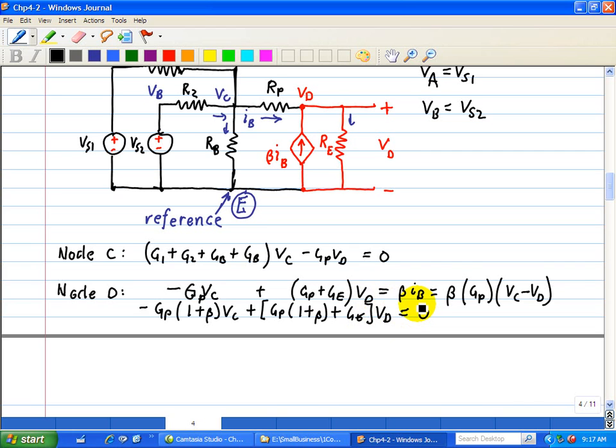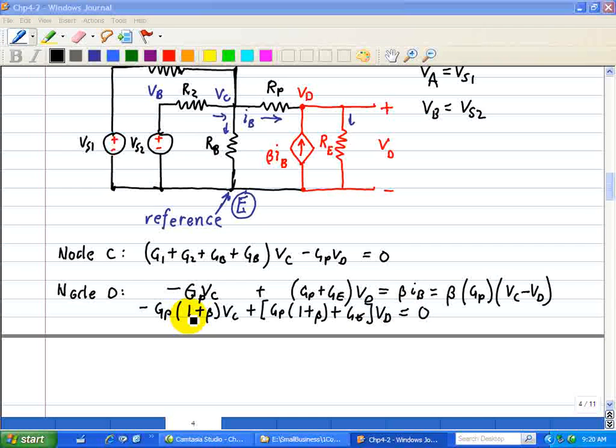So this is what we did in terms of node voltage analysis for nodes C and D, and we basically almost did it by inspection. In our last equation, it involves two unknown node voltages, VC and VD, and includes the effects of the dependent source. However, note that the symmetry is destroyed due to the dependent source constraint.